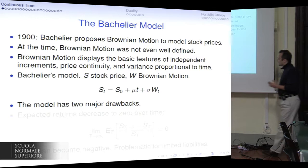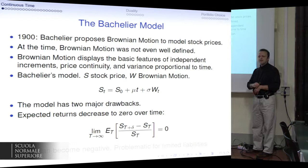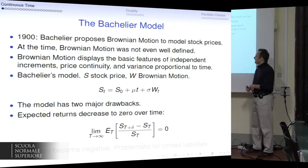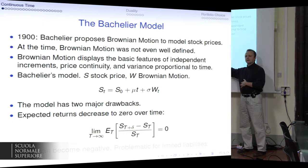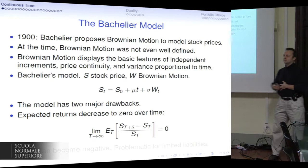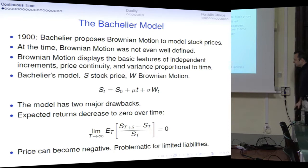The model itself was quite groundbreaking at the time, but for modern applications it has two major problems. The first major problem is that it implies expected returns which decline to zero over time. If you sit at time T and look at the expected return between T and T plus delta, you see that this is going to zero as T keeps going. This is counterfactual because if you look at what has happened over the last 100 or 200 years, stock prices have kept on average constant returns.